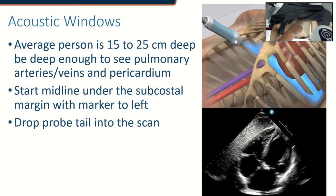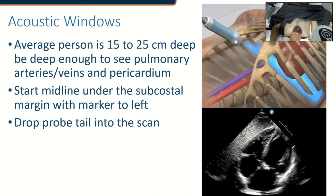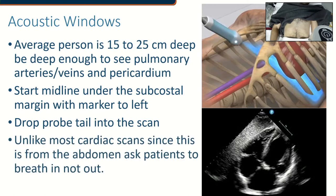We drop our probe into the scan — I like to start vertical because I know I have to drop into the scan to fan through the heart and up into the thorax. By dropping the tail of the probe, I'm shooting up toward the patient's head to scan the thorax. Unlike most other cardiac scans where we want the patient to breathe out to rid air artifacts, since we're scanning from the abdomen we actually want the patient to breathe in — not out — because that drops the diaphragm and brings the heart closer to our probe.